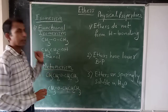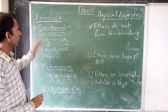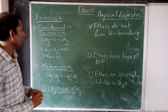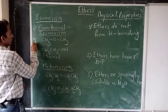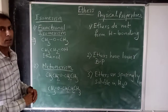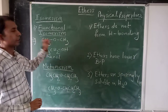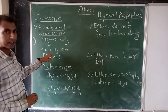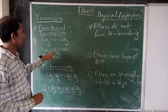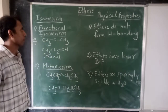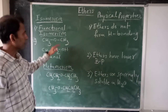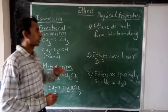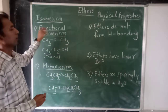And the second one is Metamerism. Let us start with the first type - functional Isomerism. We have this example here: CH3-O-CH3. And the second structure written here is CH3CH2OH. Now, what is the difference between these two structures? That we have to understand.